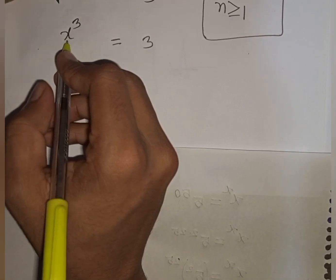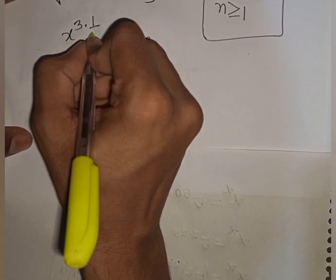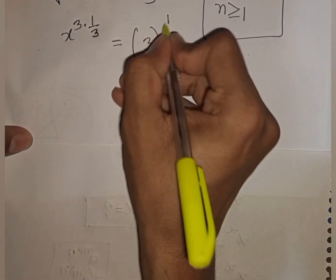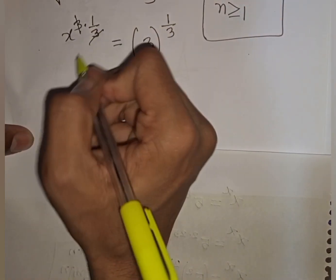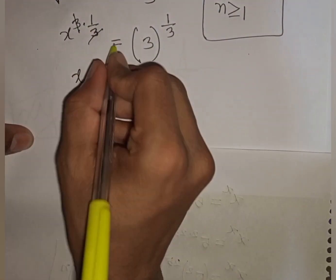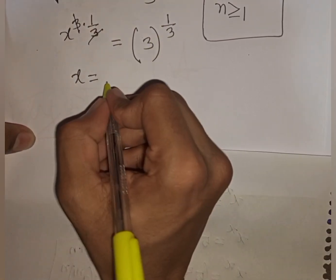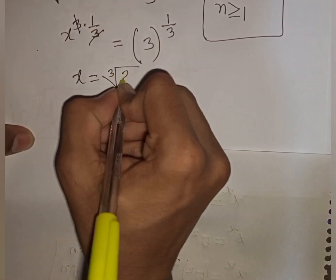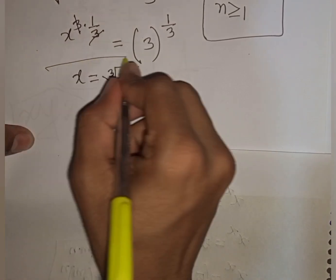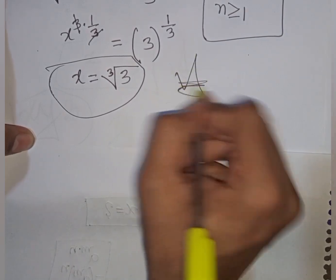Using the rule a power a equals n power n implies a equals n, we compare and get x to the power (1/3) equals 3 to the power (1/3). Raising both sides to the power of 3, x equals 3 to the power (1 over 3), which is the cube root of 3. This is our final answer.